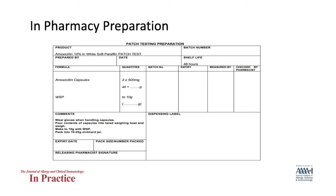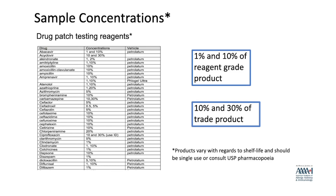If you have a compounding pharmacy, the most standardized way for preparation of drugs is in pharmacy manufacturing. Your pharmacy will be able to order reagent grade products or trade products for preparation. The shelf life will depend on published data, though this information may be derived from USP pharmacopoeia rather than being readily available in the literature. In general, most antibiotics have a stable shelf life at room temperature of one to three months.